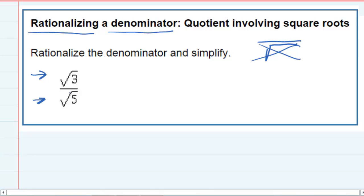So to get rid of this square root of 5, the method that we can use is we can always multiply a fraction by 1 and nothing changes.